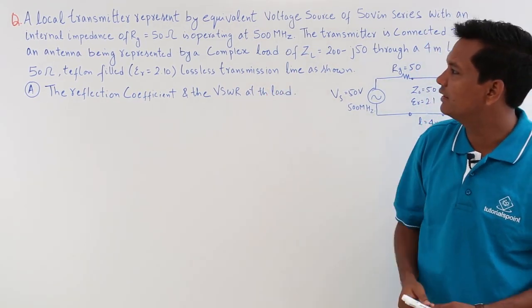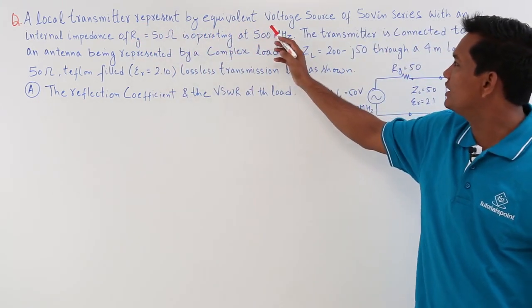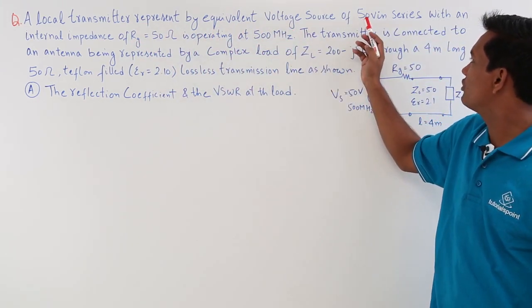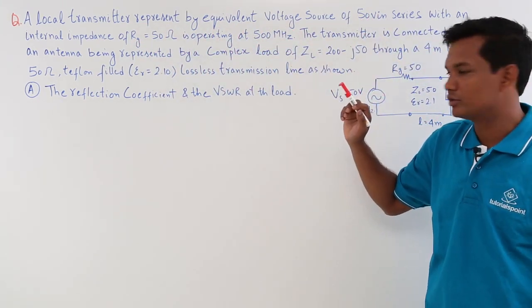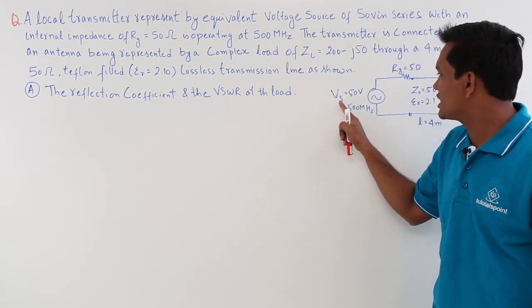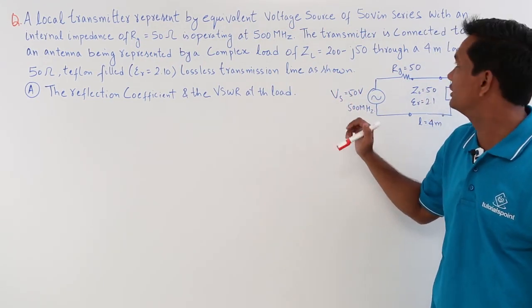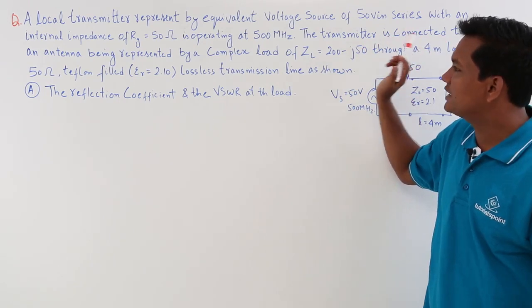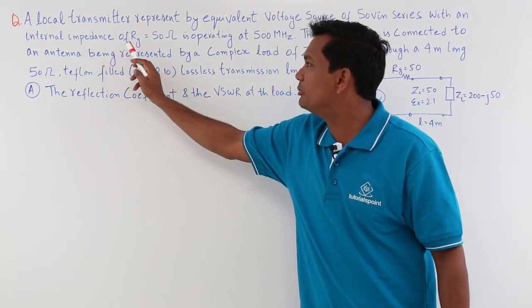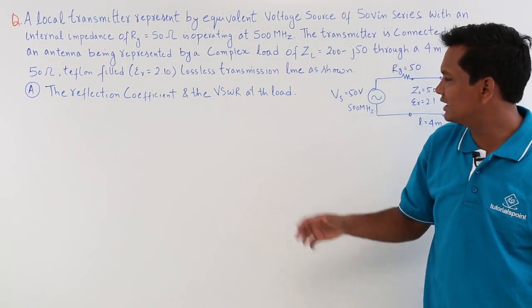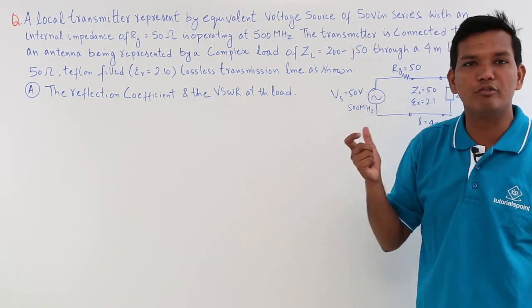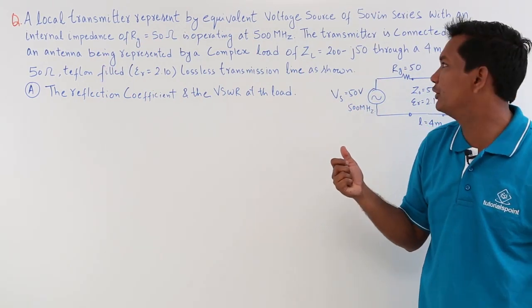It is given that there is a local transmitter represented by an equivalent voltage source of 50 volts. The transmitter is 50 volts at 500 megahertz. It is in series with an internal impedance Rg of 50 ohm. This is the internal impedance of the source, given as 50 ohm.